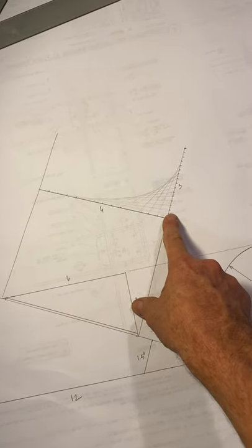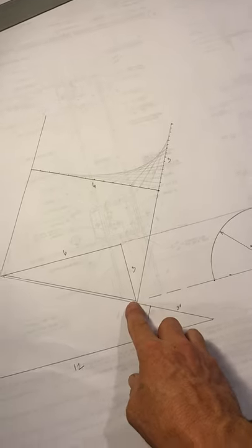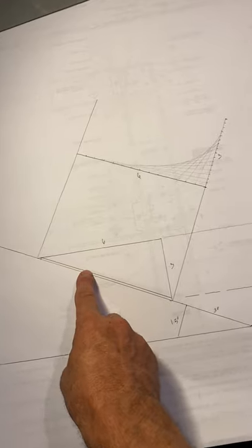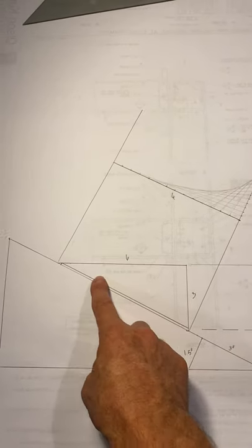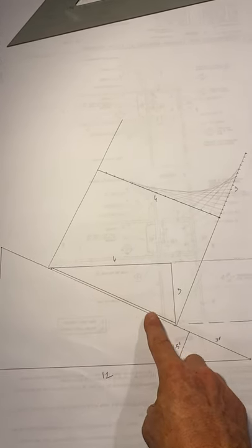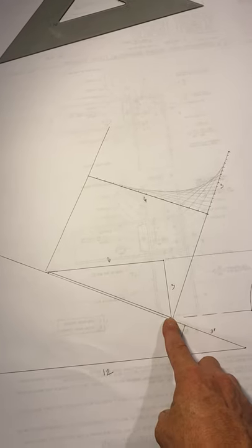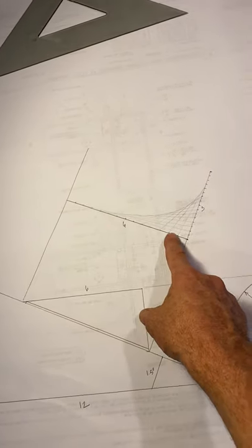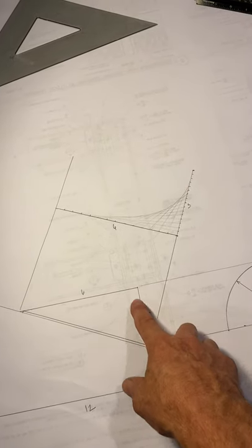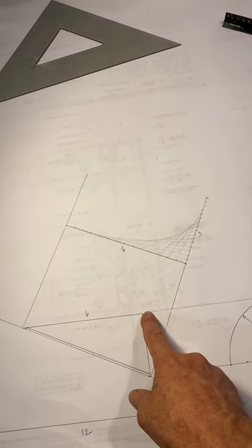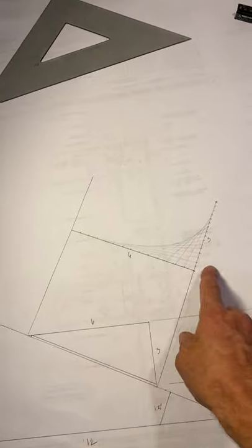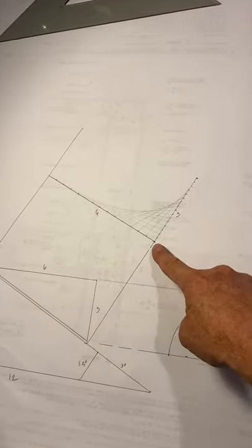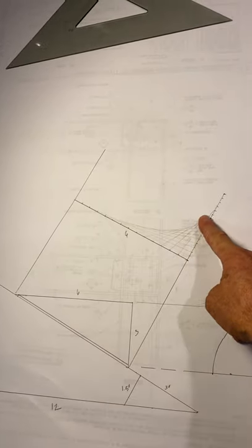And you could do this by math. This is essentially a six-foot run times the line length ratio would give you this rafter length. We always did it by the math, so you didn't have to snap the whole thing out. So one leg would be the rafter length of a three-foot rise, six-foot run. The other length would be half of the minor.